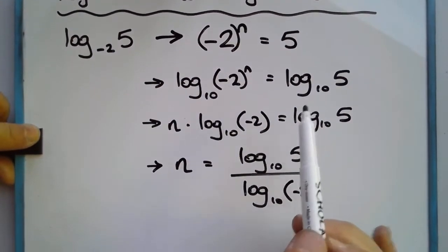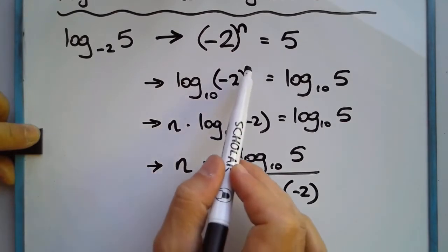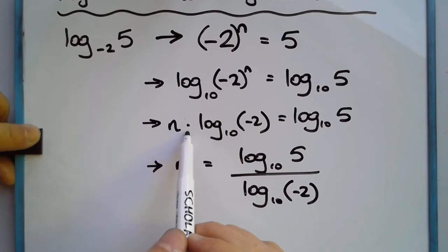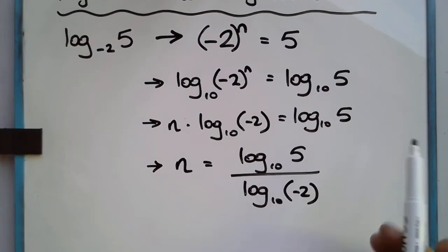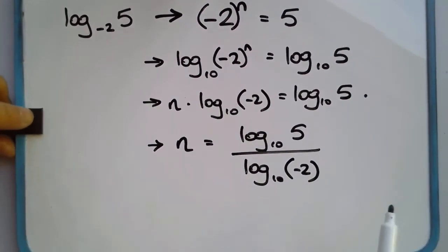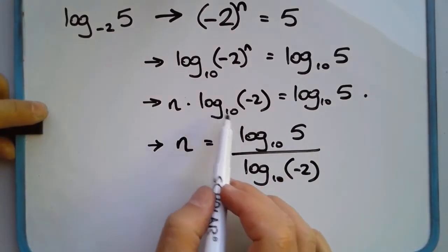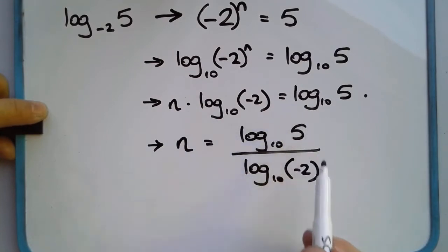So let's apply the log to both sides. The n, the power of the negative 2 comes out to the front, so it's n times log base 10 of negative 2 equals log base 10 of 5. That's fine. So far, so good up to this point. Now let's divide both sides by log base 10 of negative 2, and you end up with this.